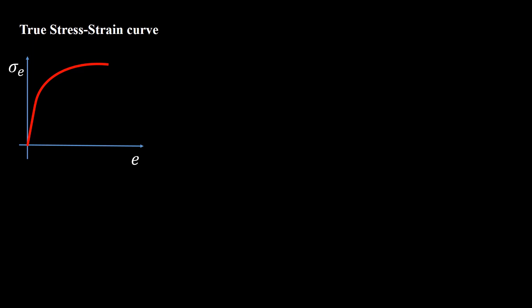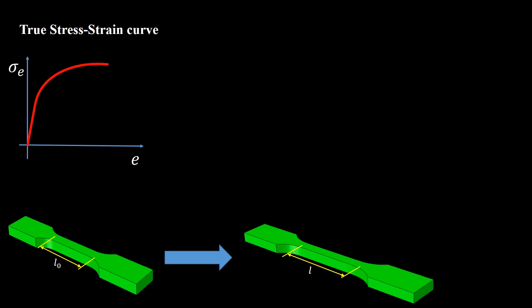To calculate true stress strain curve from the engineering one, at first we calculate true strain from the engineering strain. The true strain is the summation of incremental strains considering the instantaneous length of L at each displacement. So we can integrate the displacement divided by the instantaneous length during the tensile test. L divided by L0 can be expressed as 1 plus engineering strain, so we can write relationship between true and engineering strain as follows.